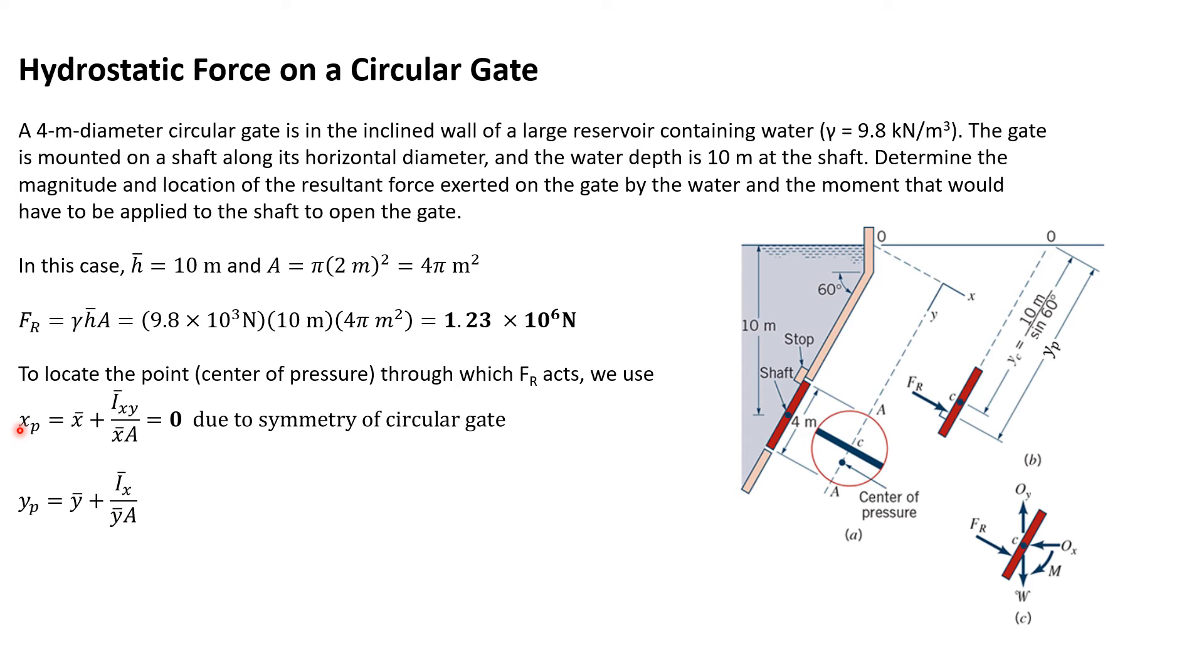x_p equals x̄ plus I_xy times x̄ over A. This is zero due to the symmetry of the gate. Remember, x is running down this way, so it's symmetric about here, making this zero.